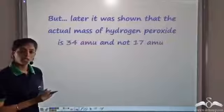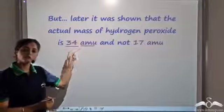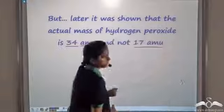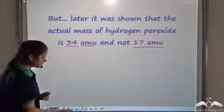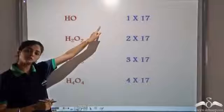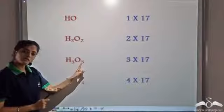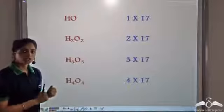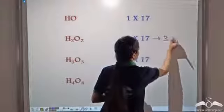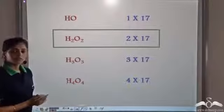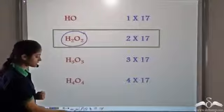Later experiments showed that the actual mass of hydrogen peroxide was 34 atomic mass units, not 17. So now we check: for HO we get 1 × 17; for H2O2 we get 2 × 17, which gives 34; for H3O3 we get 3 × 17, and so on. So for which one do we get 34 atomic mass units? In this case H2O2 gives us 34, and this is the actual formula of hydrogen peroxide, known as the molecular formula.